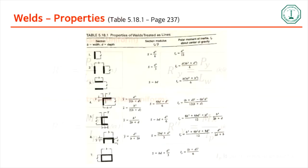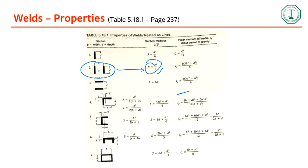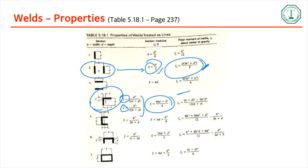The polar moment of inertia Ip can be calculated from a table available in the textbook on page 237, Table 15.18. For a symmetric weld section, the centroid is at b/2 and d/2, and the section modulus and Ip are given by equations in that table. For an unsymmetric weld, you calculate x-bar and y-bar from the provided equation, then find the section modulus and Ip accordingly.